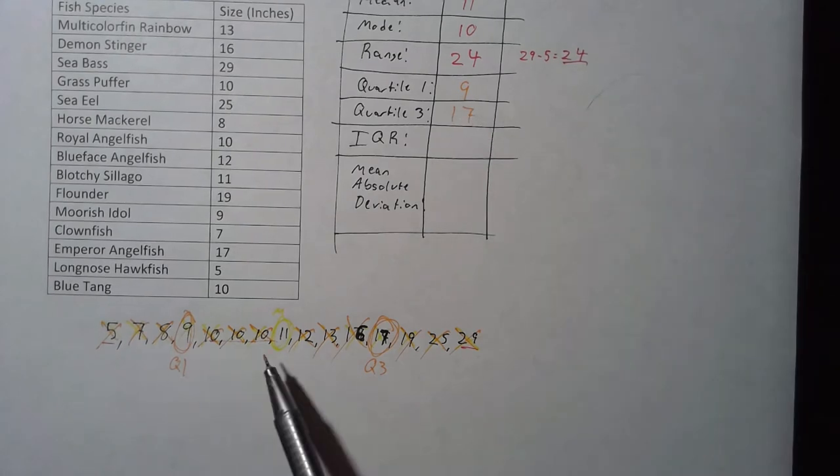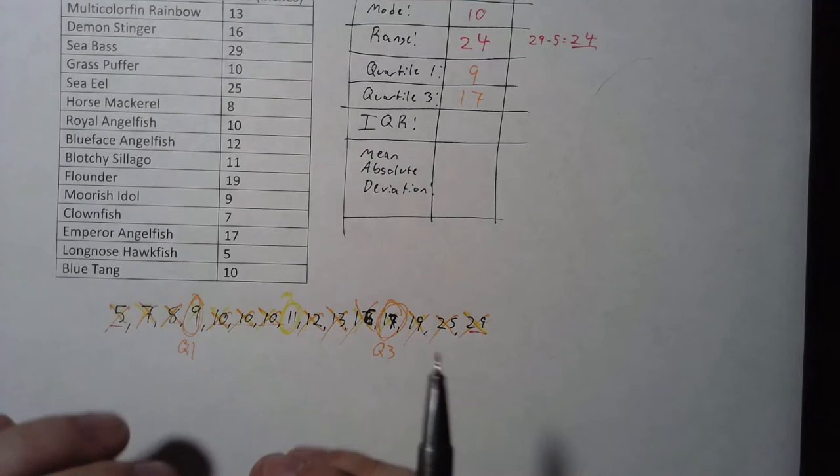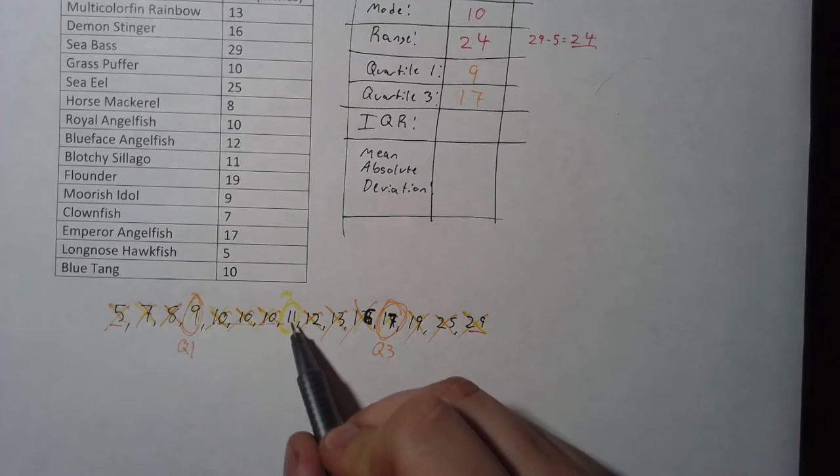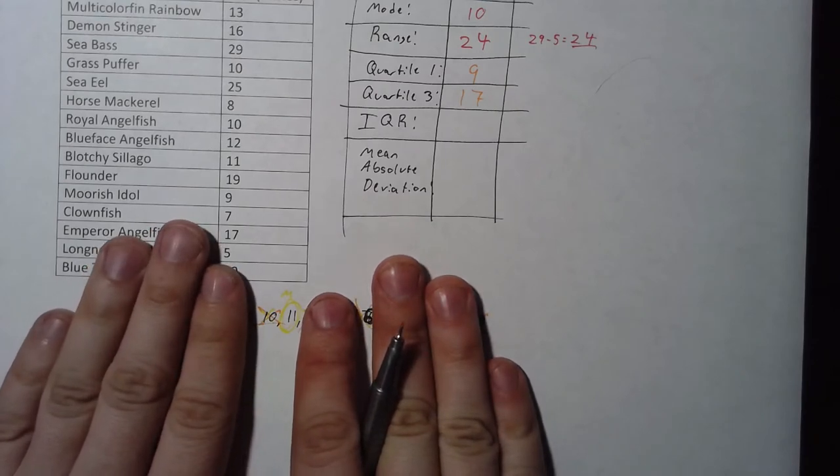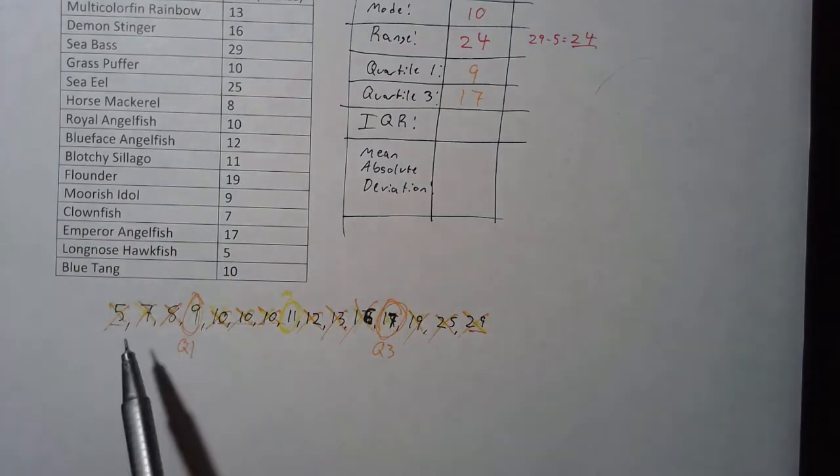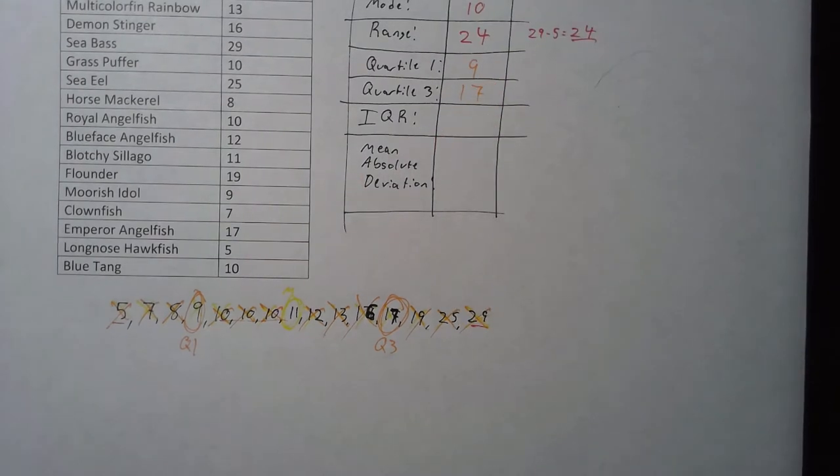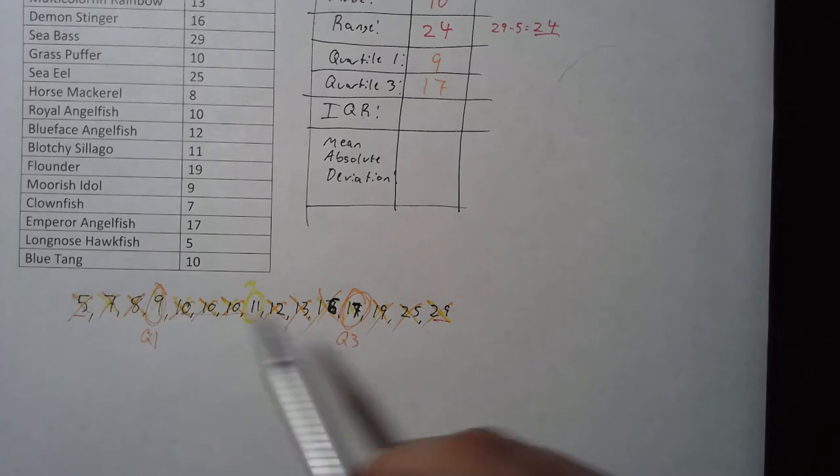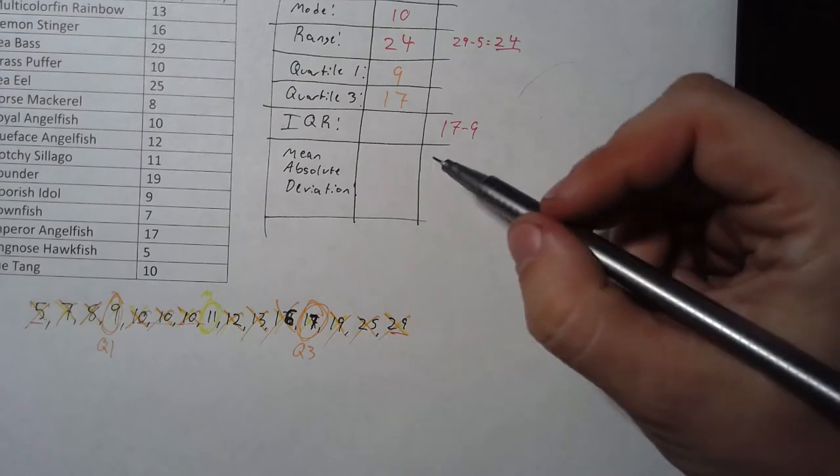One important thing I should mention. If you are ever finding the quartiles or median, and you have two numbers that are sharing the middle, then you would have to find the mean of those two numbers. So if my two numbers in between were 10 and 11, for example, then what I would do is I would add 10 plus 11, and then divide that by 2. And that would give me my real median. We got lucky here, and we had a perfectly odd number of data points. So we don't have that issue. While we have our quartiles, we can go ahead and fill in our IQR, interquartile range. Interquartile range is just quartile three minus quartile one, 17 minus 9. And that's going to give us 8.